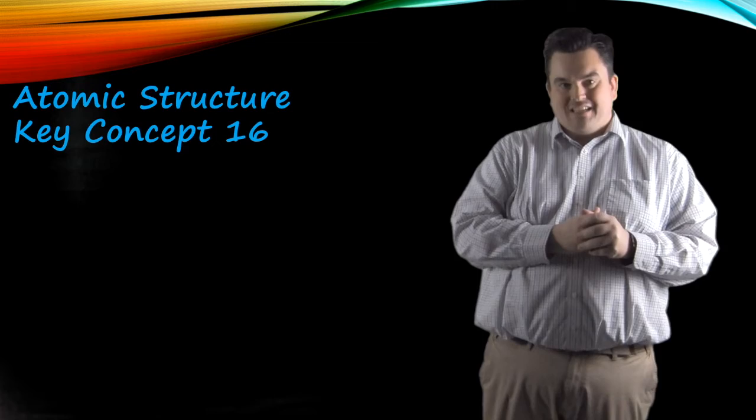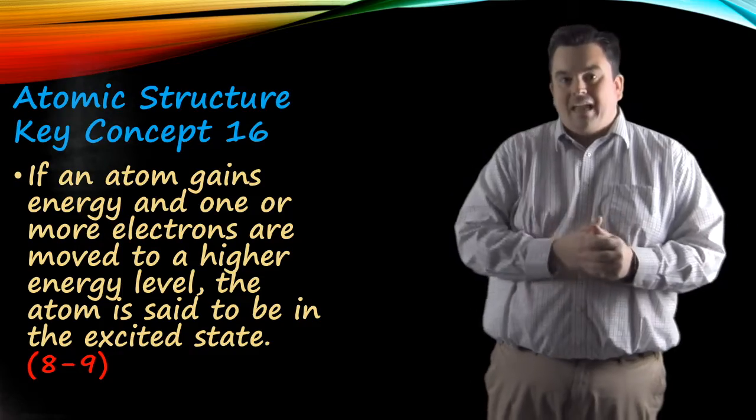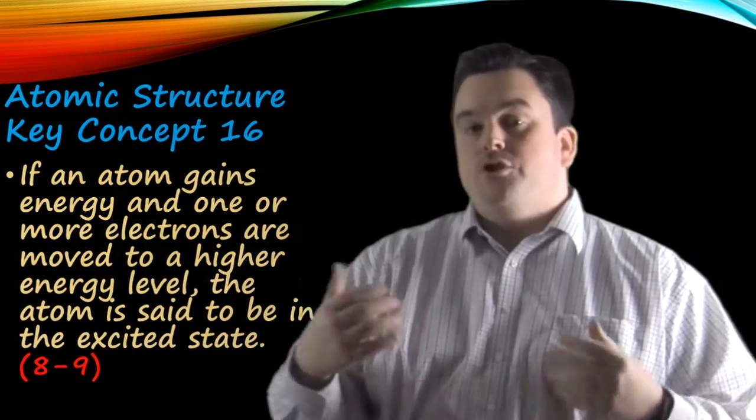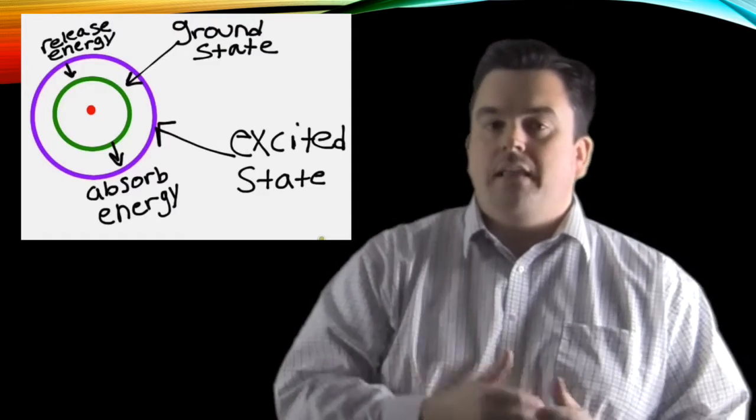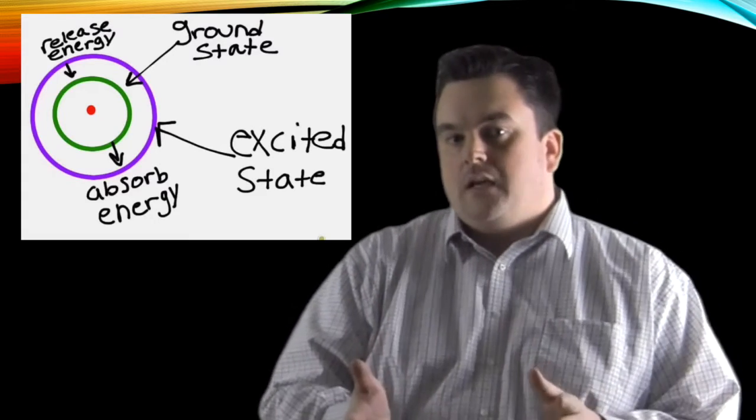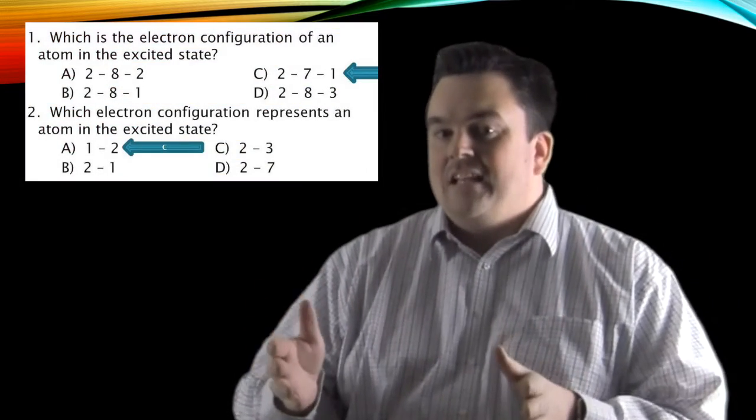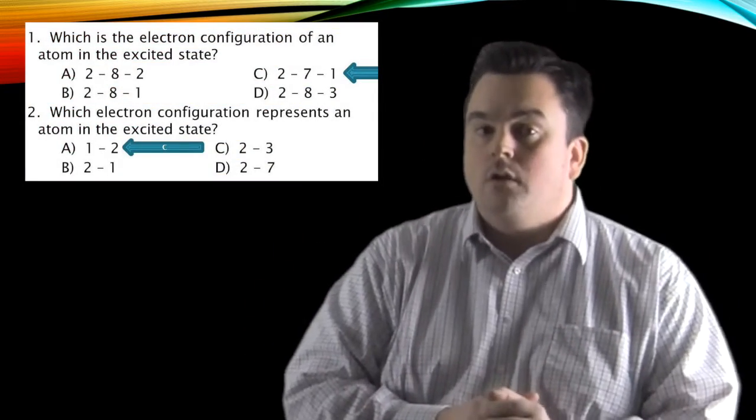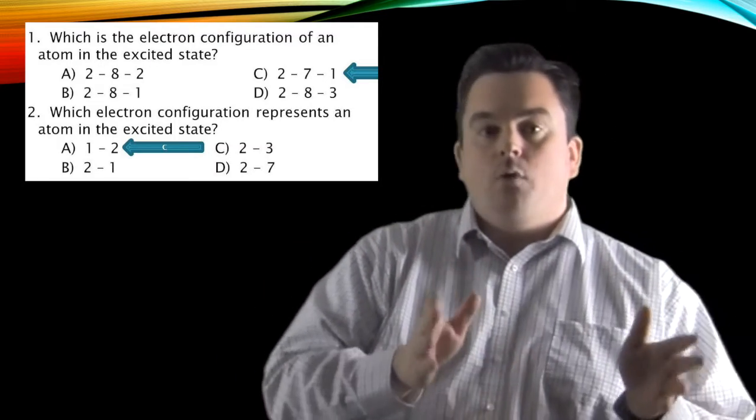Atomic structure, key concept sixteen. If an atom gains energy and one or more electrons are moved to a higher energy level, the atom is said to be in the excited state. Now, as Shu just got done explaining, the ground state electron configuration for all of the elements is found in your periodic table on your reference tables. Now, your job will be to compare the electron configurations they're giving you to the ones on your reference tables. Now, it's important to note that the excited state has the same number of electrons total as it did in the ground state. The difference is, at least one or more of those electrons have moved to a higher energy state further from the nucleus.